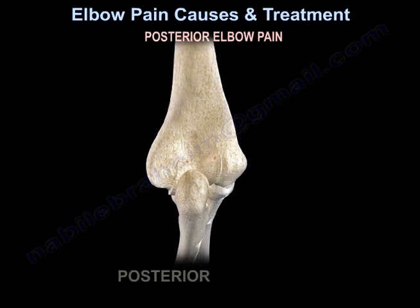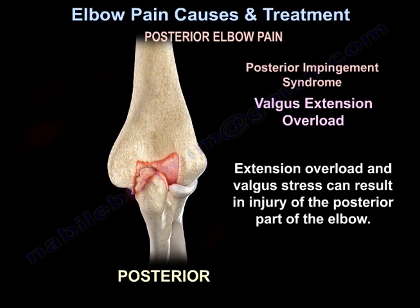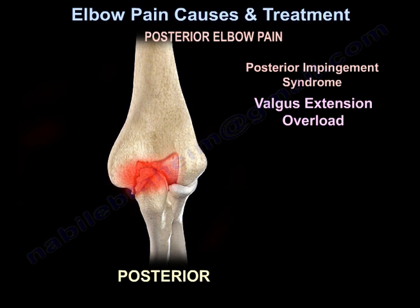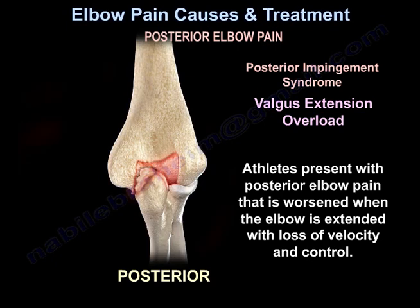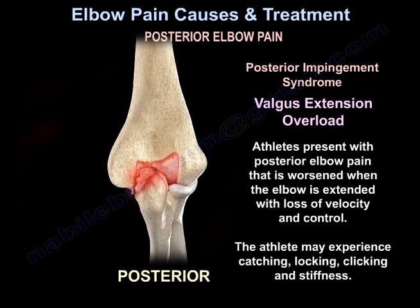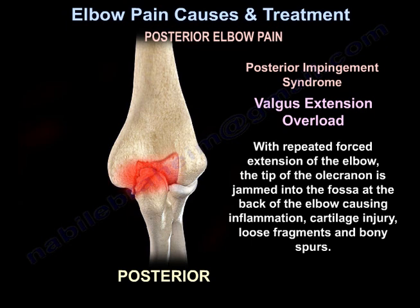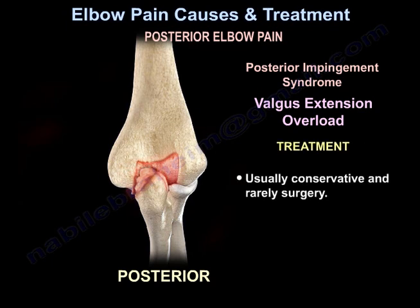Posterior elbow pain: posterior impingement syndrome — valgus extension overload. Extension overload and valgus stress can result in injury of the posterior part of the elbow. Athletes present with posterior elbow pain that worsens when the elbow is extended, with loss of velocity and control. Athletes may experience catching, locking, clicking, and stiffness. With repeated forced extension, the tip of the olecranon is jammed into the fossa at the back of the elbow, causing inflammation, cartilage injury, loose fragments, and bony spurs. Treatment is usually conservative, and rarely surgery.